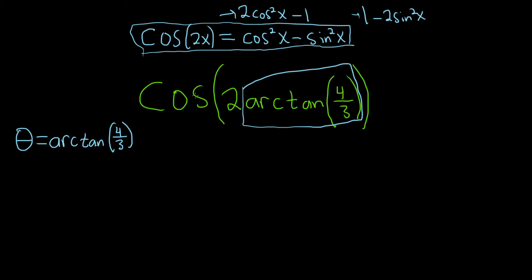And let's go ahead and apply our identity. So this will be the cosine of 2 theta now because we called it theta. And this is equal to cosine squared theta minus sine squared theta.